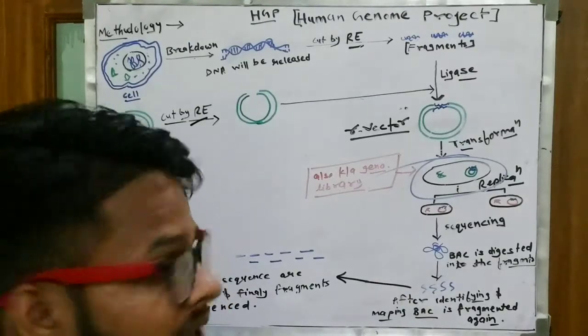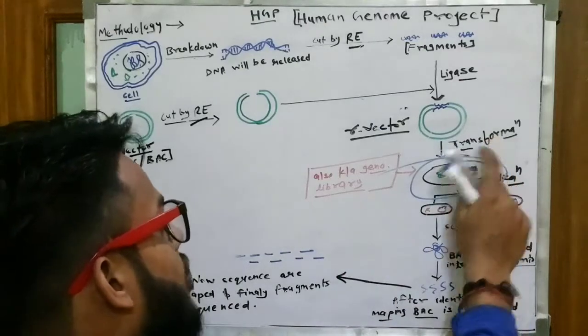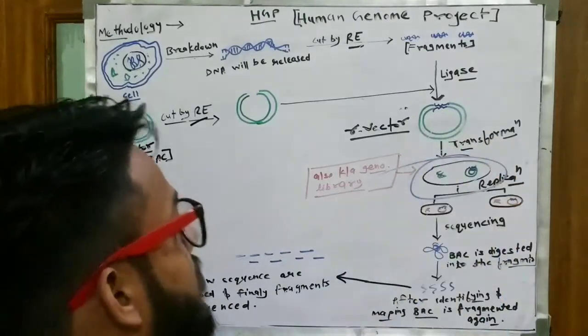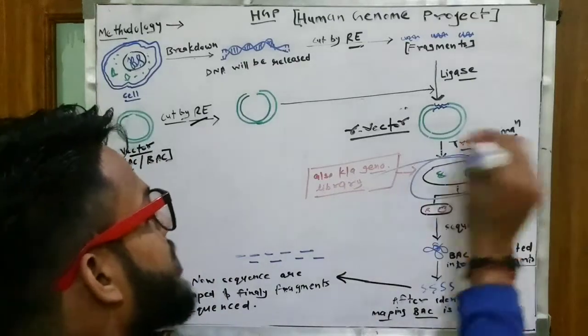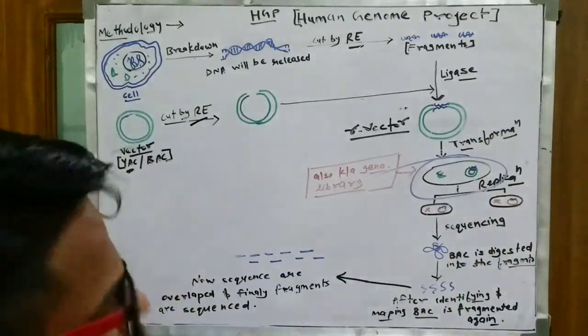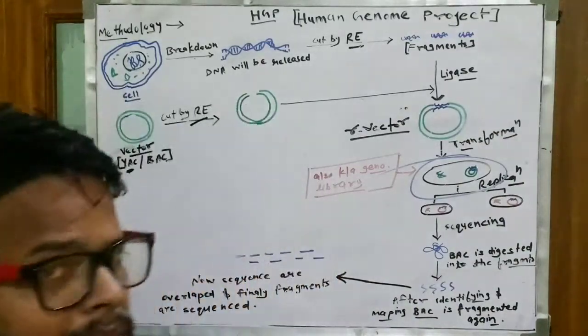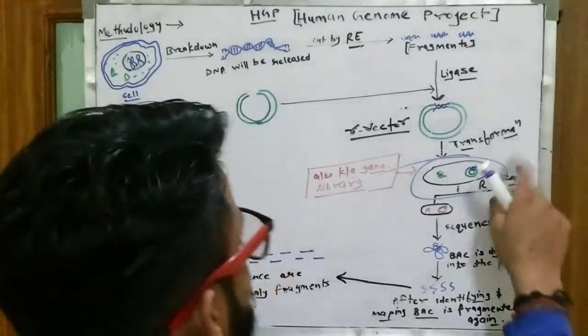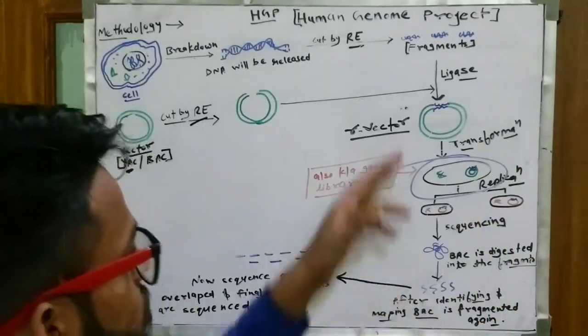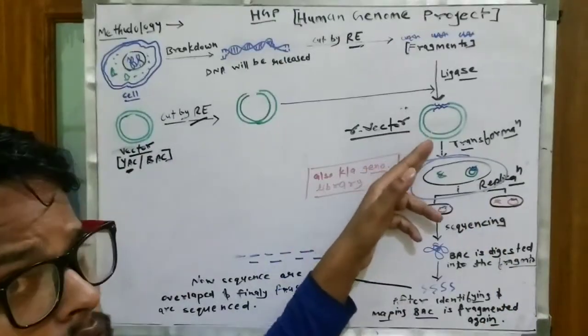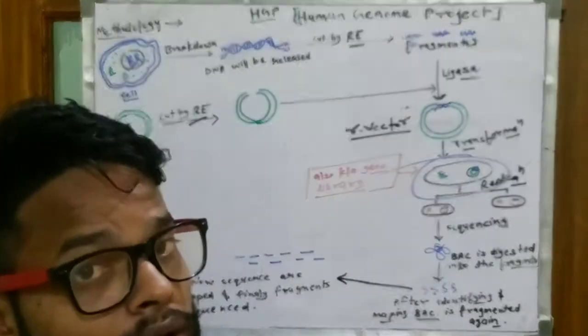Now what do we need to do? We need to transform into bacteria or yeast. I have taken the bacteria example. Then we have to transform our desired vector or our desired gene inside the bacteria. Now this is the transformation process. There are so many transformation processes, physically, chemically.